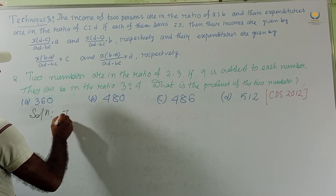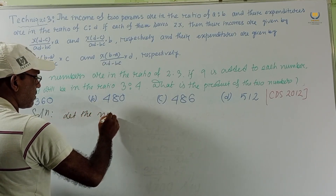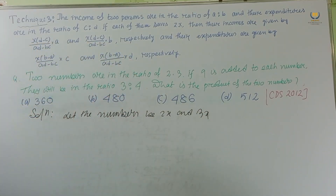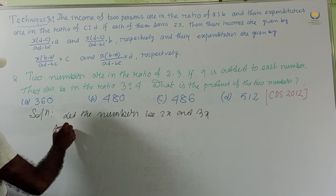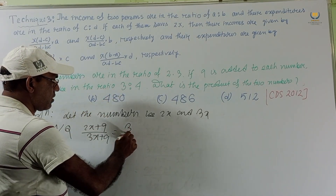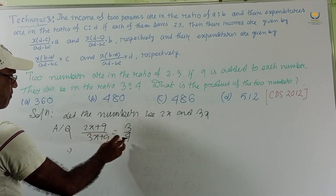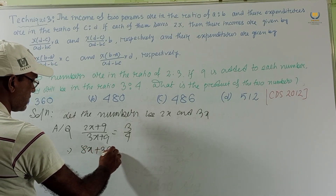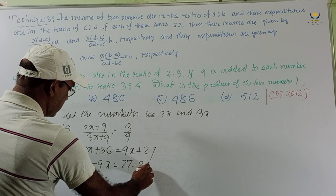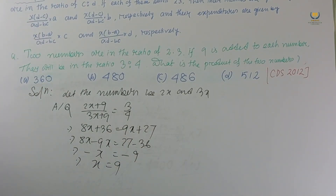Solution: since the numbers are in the ratio 2:3, let the numbers be 2x and 3x. According to the question, (2x + 9) / (3x + 9) = 3/4. Cross-multiplying: 8x + 36 = 9x + 27, so 8x − 9x = 27 − 36, giving −x = −9, therefore x = 9.